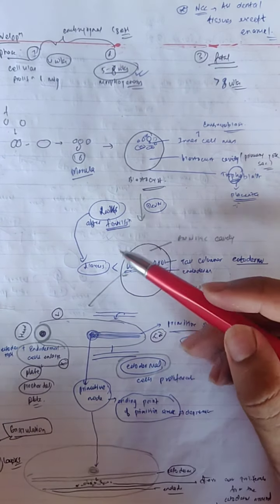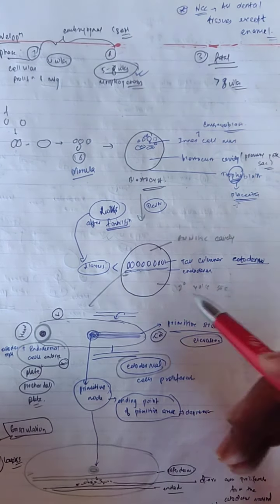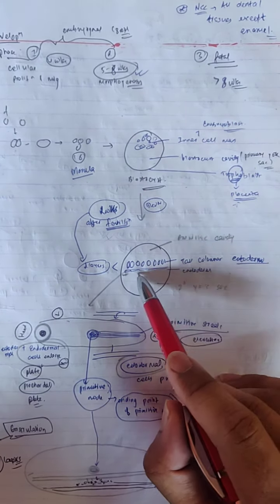In two weeks, there are two layers of formation after fertilization and development. The inner cell mass is converted into two cells.